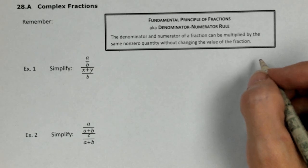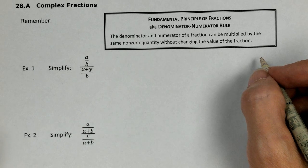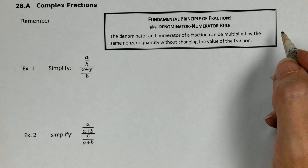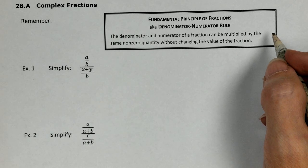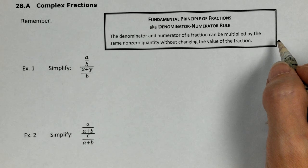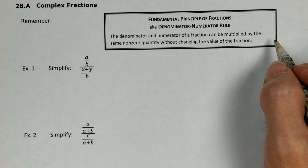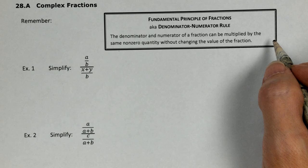Algebra 2, Lesson 28, Part A is Complex Fractions. A complex fraction is just a fraction with another fraction in it, and you can see we have those here in our examples. We start out with a reminder of the fundamental principle of fractions, otherwise known as the denominator-numerator rule that we worked with ever since Lesson 11 this year. Basically, it states that you can multiply any fraction by some other number as long as it's equivalent to 1. Whatever you multiply the denominator by, you also multiply the numerator by, and it won't change the value of the fraction. We're going to use that to simplify these complex fractions.